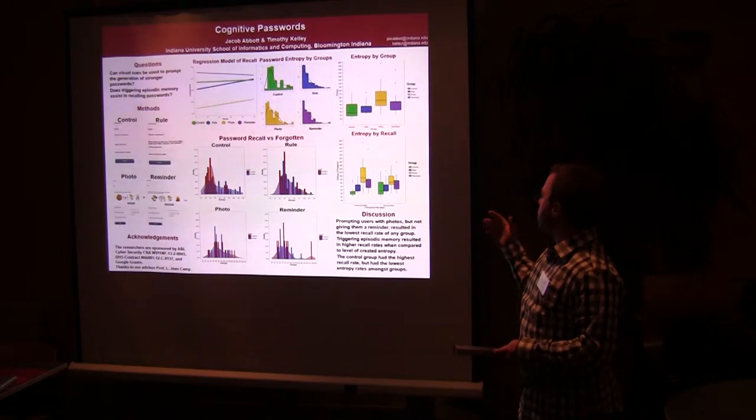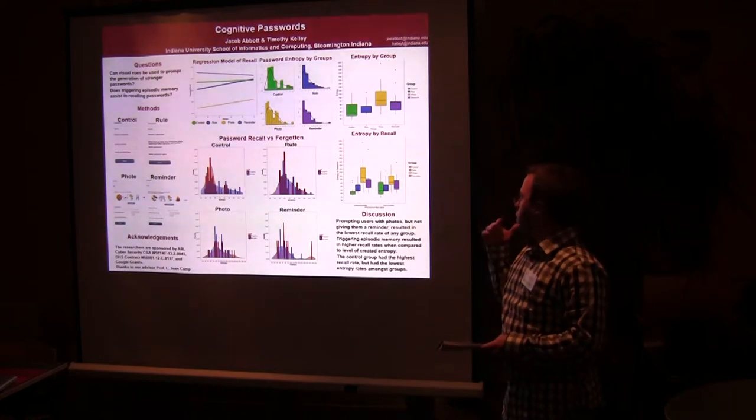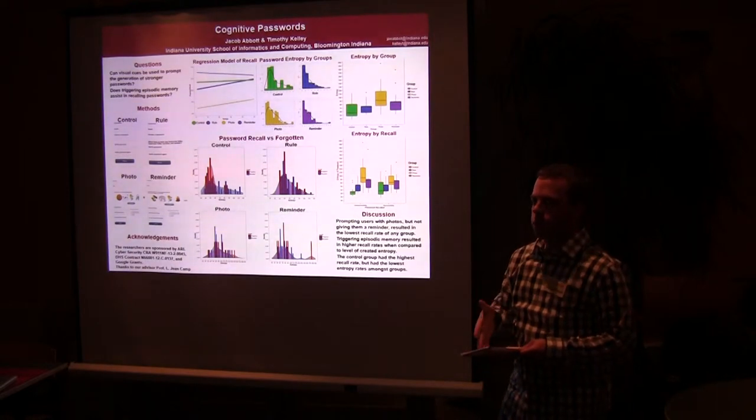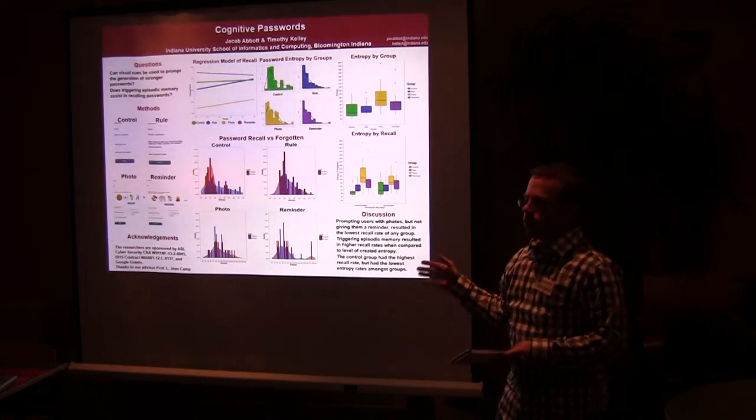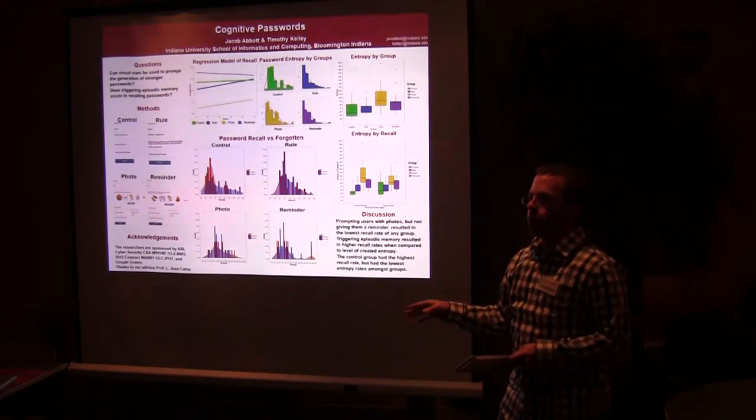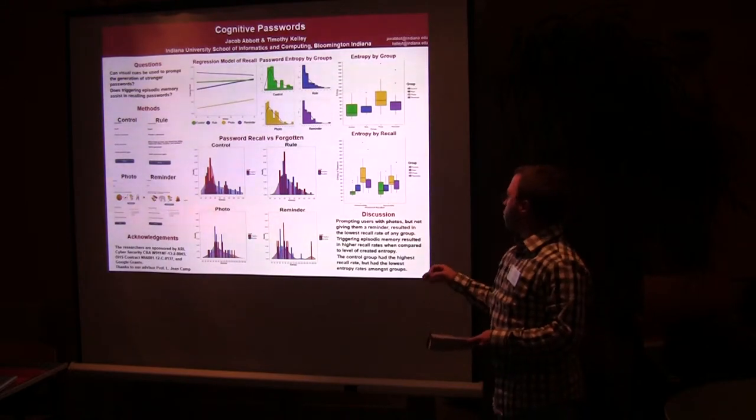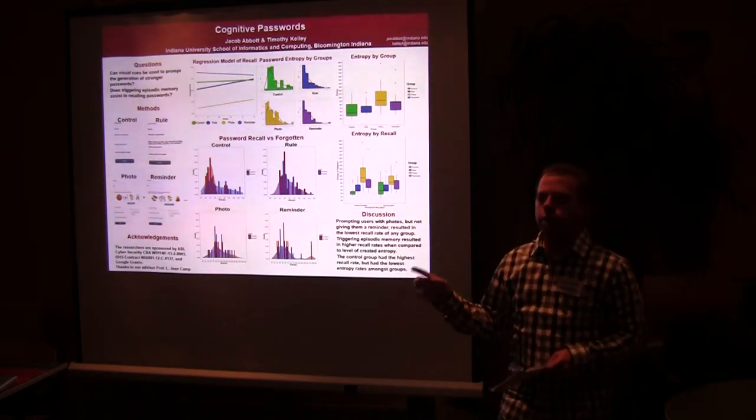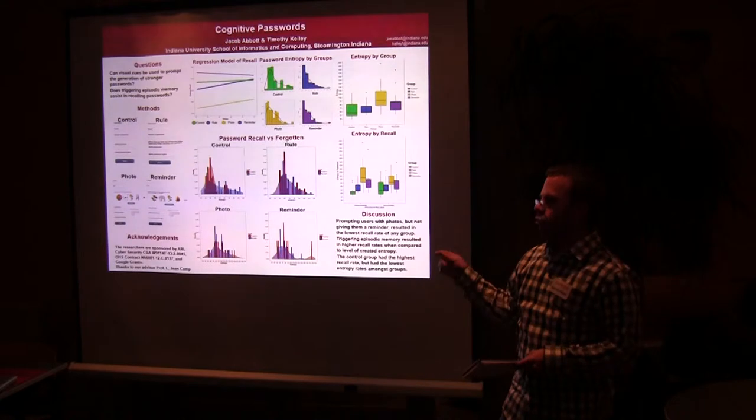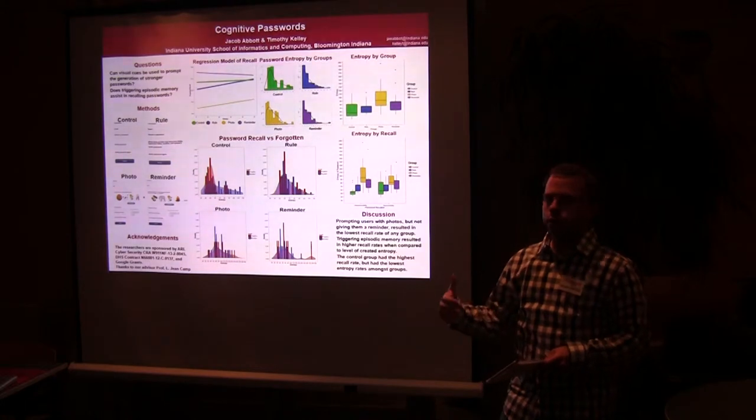But the difference is when we looked at how many actually recalled their password versus forgetting them, the control group actually had successful recall about 77 percent of the time. The rule group was 70 percent. The photo group, which had the highest entropy values, actually had the lowest successful recall rate at about 47 percent, which was the worst of any of the groups. The reminder group, however, actually had a 74 percent recall rate, which is less than the control group. But when you compare the entropy values of the passwords between the control and the reminder group, the reminder group is significantly higher.